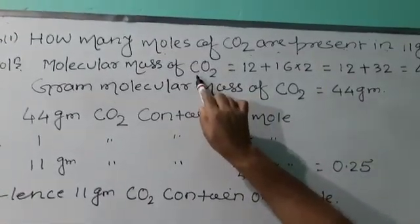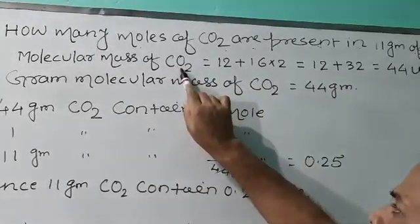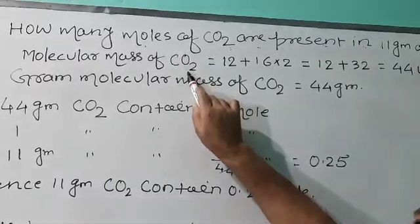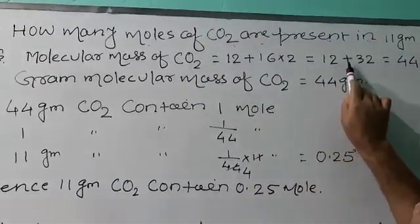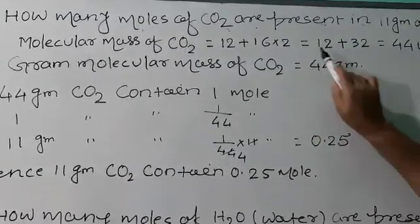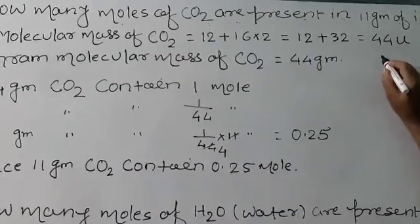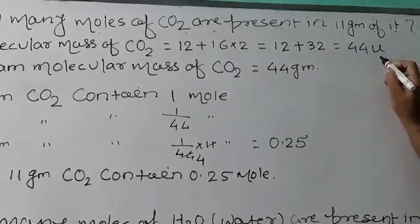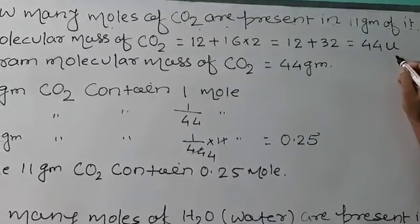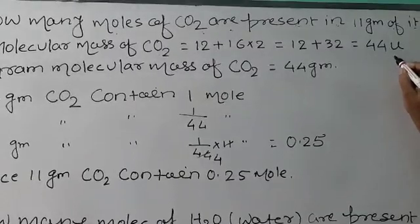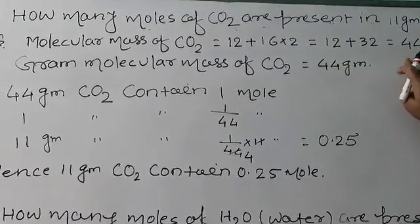The atomic mass of carbon is 12. Oxygen has an atomic mass of 16, and there are 2 oxygen atoms, so 16 into 2 equals 32. Adding them: 12 plus 32 equals 44. The unit is the atomic mass unit — you can write it as AMU or AU. So the molecular mass of CO2 equals 44 U.